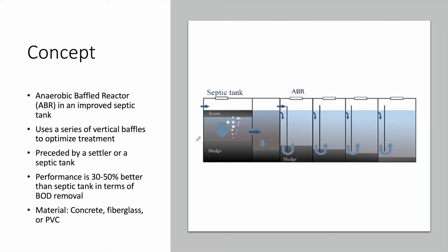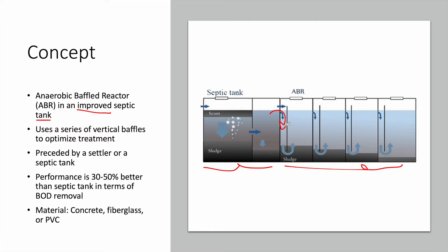The Anaerobic Baffled Reactor is considered an improved septic tank. It is a primary treatment system usually used for small to medium scale projects and is mainly considered a decentralized wastewater treatment system. It consists of a normal septic tank followed by many vertical compartments with a series of vertical baffles, ensuring better performance — about 30 to 50 percent more removal of BOD compared to a standard septic tank.